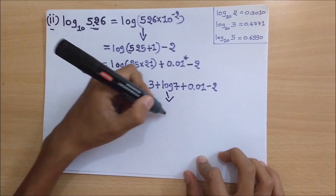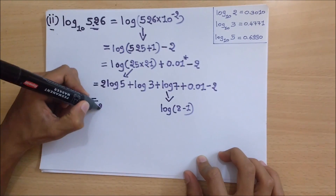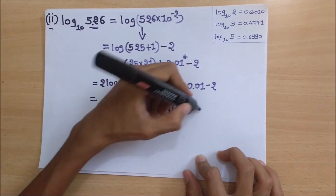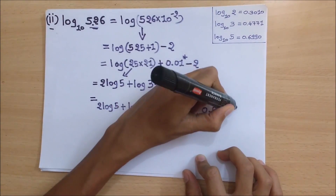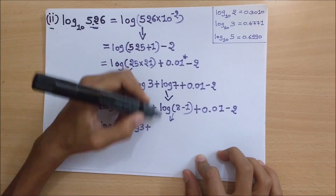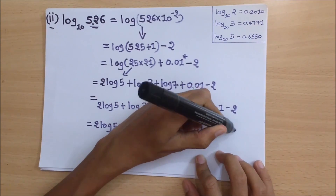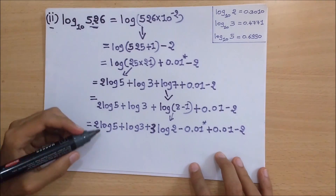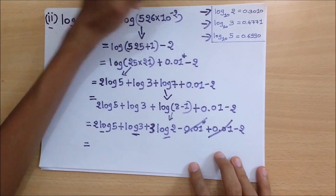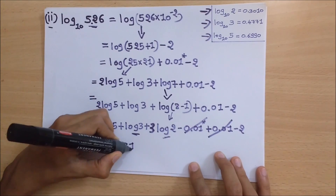Here we can write log of 7 as log of 8 minus 2. So the previous expression can be written as 2 times log of 5, plus log of 3, plus log of 8, minus 1, plus 0.01, minus 2. Now we have turned the question into log values which we have already remembered, so we can put them in and get the answer. The answer is 0.7781, which is very close to the actual answer. Note that this trick is for estimated values — don't use it for accurate calculations.